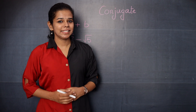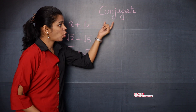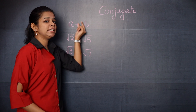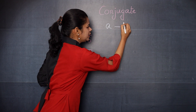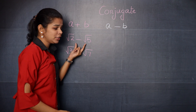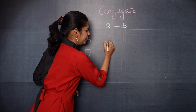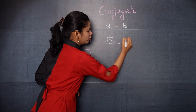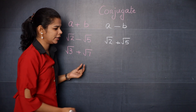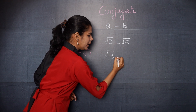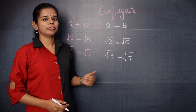What is a conjugate? Let's see some examples. If you have a plus b, the conjugate will be just change the sign, so it will be a minus b. In this case, it is root 2 minus root 5, so the conjugate will be root 2 plus root 5. Here you have root 3 plus root 7, so the conjugate will be root 3 minus root 7. It is really simple to find the conjugate.